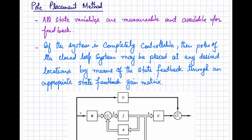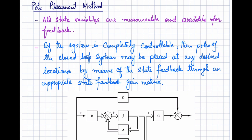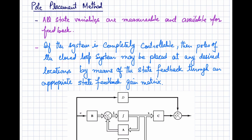In this video we will discuss a method commonly called the pole placement method or pole assignment technique, which is used to design the feedback controller. This method is used when all the state variables are measurable and available for feedback. If the system is completely controllable, meaning we can change from some initial state X(t0) to some other state by applying an unconstrained input, then the poles of the closed-loop system may be placed at any desired location by means of state feedback through an appropriate state feedback gain matrix.